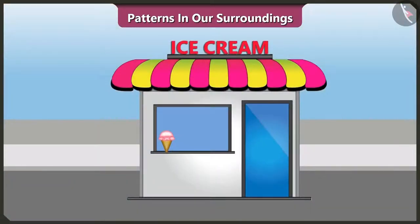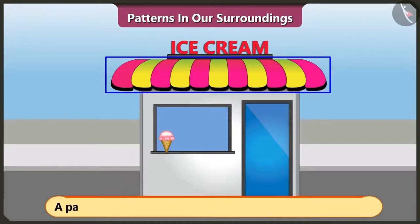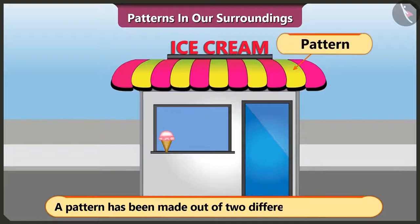Now look at the roof of this ice cream shop. Does it have a pattern? Yes, here two different color stripes have been used to make a pattern.